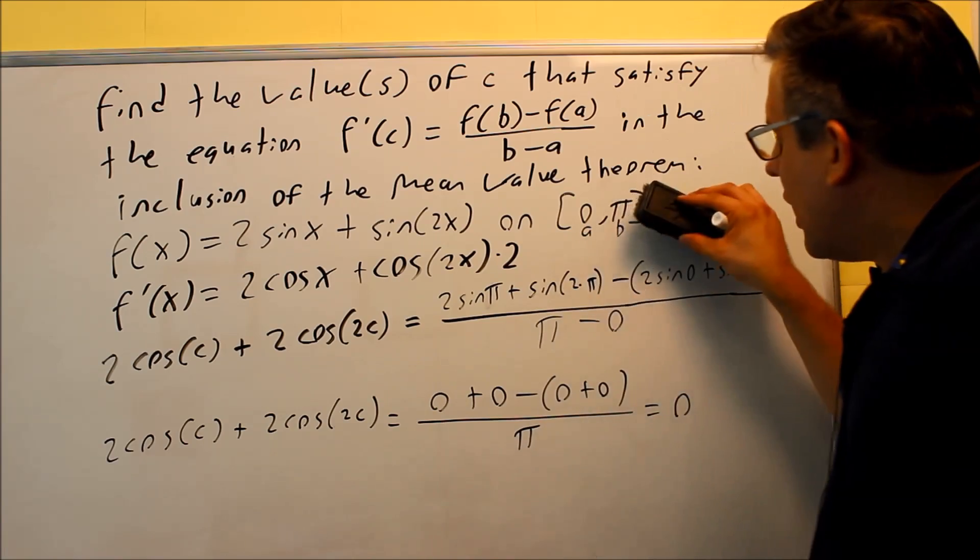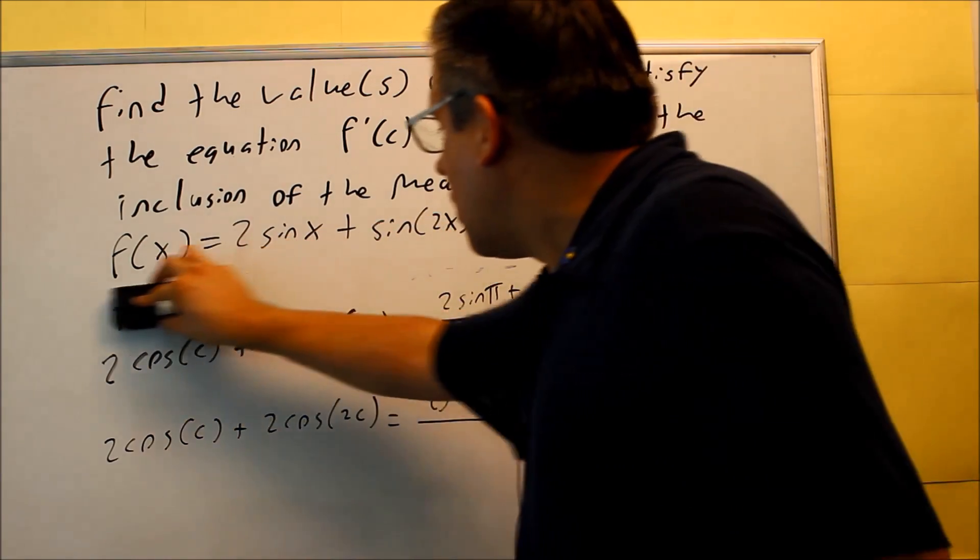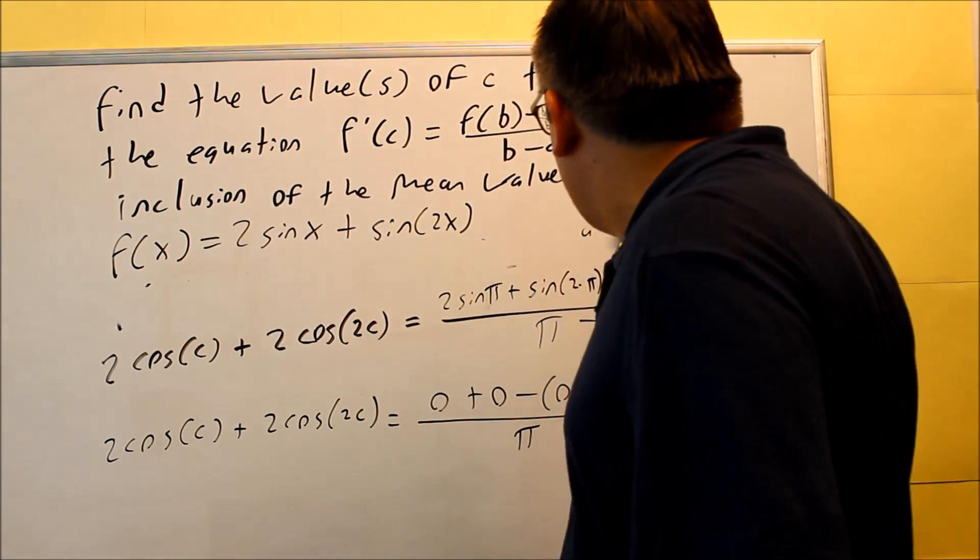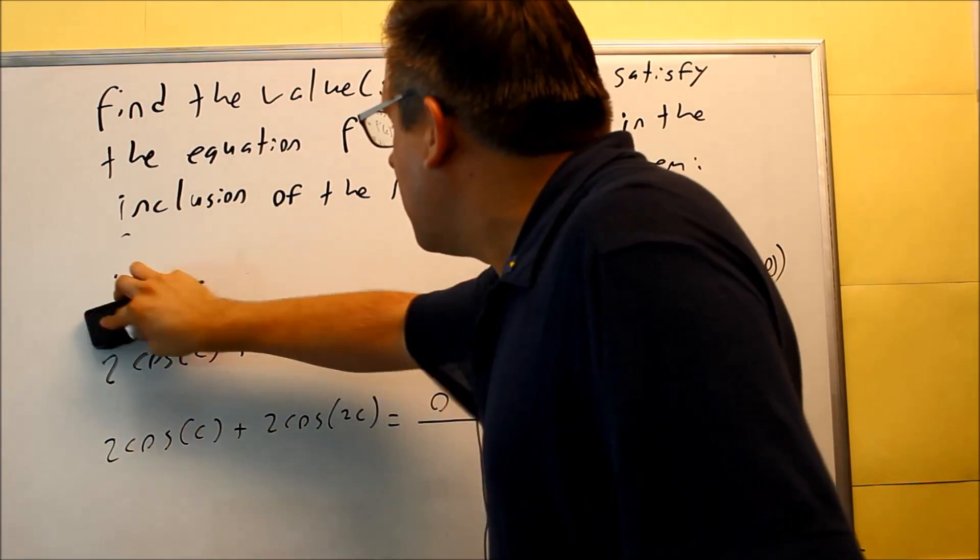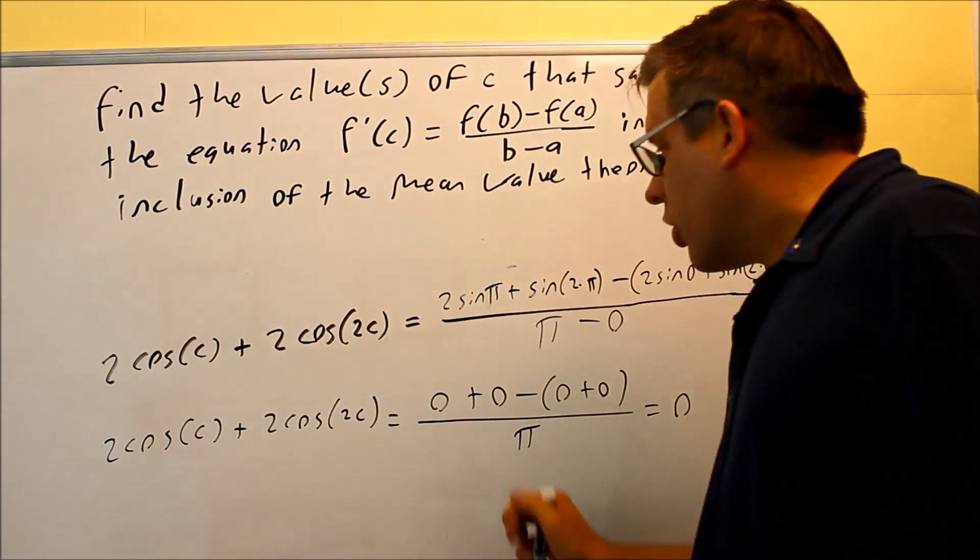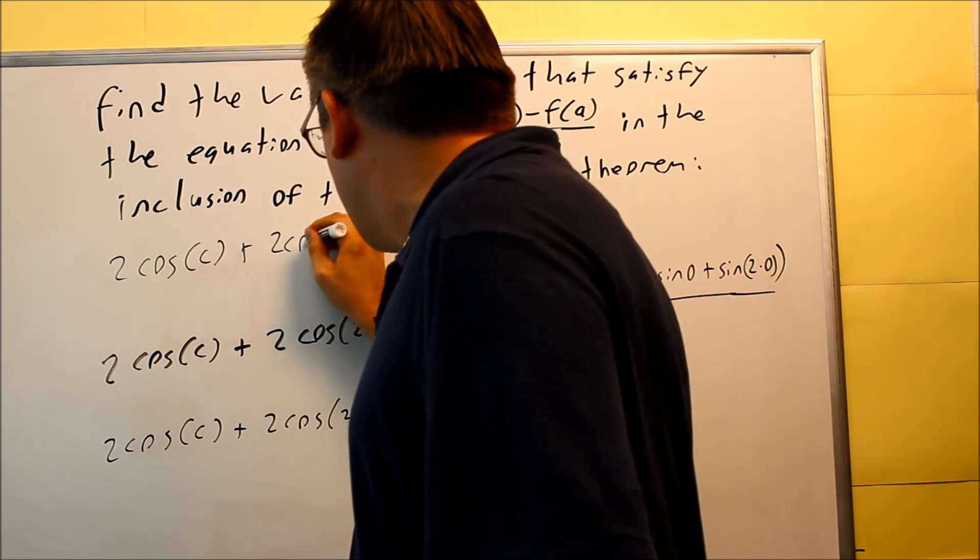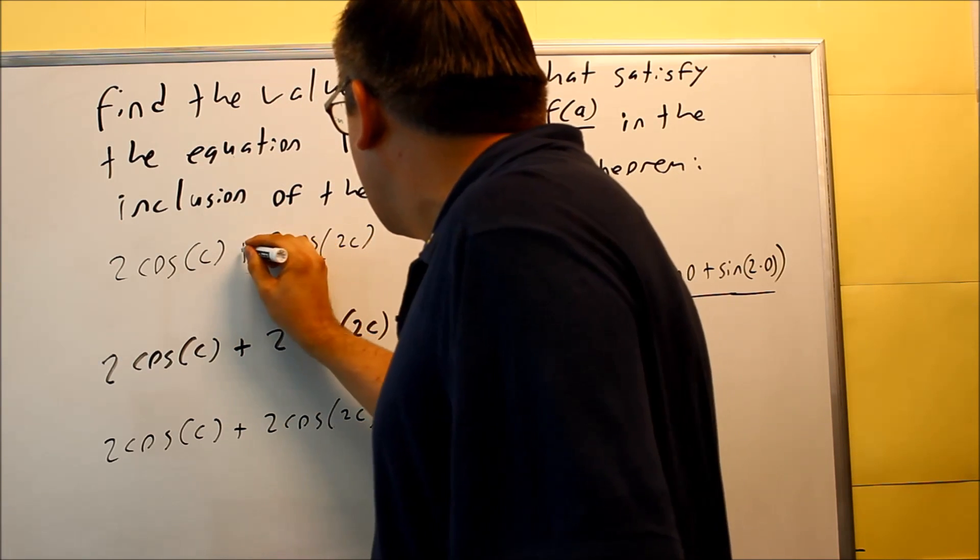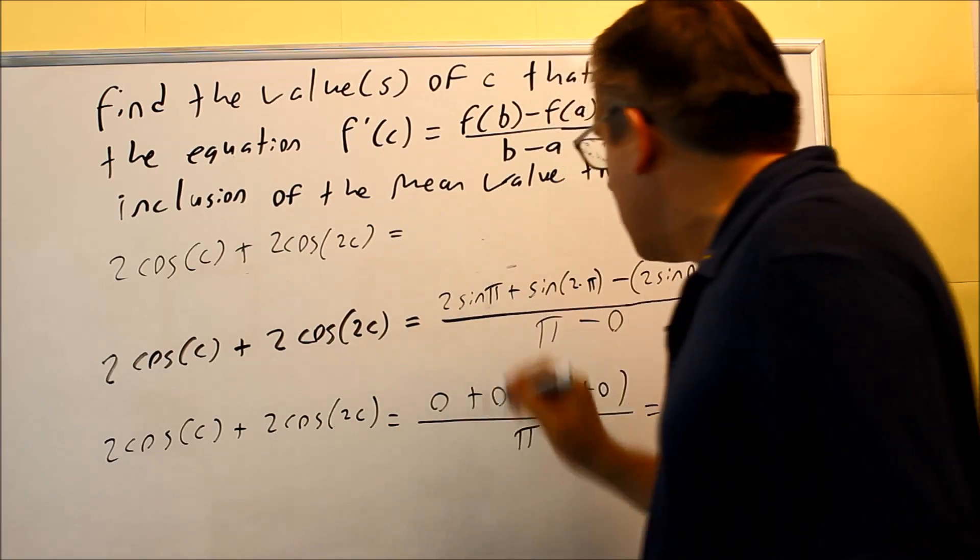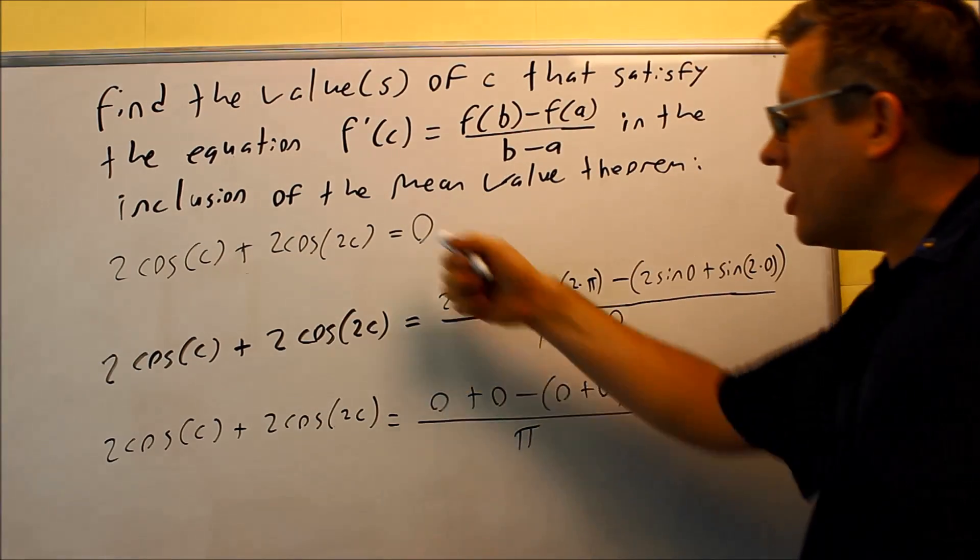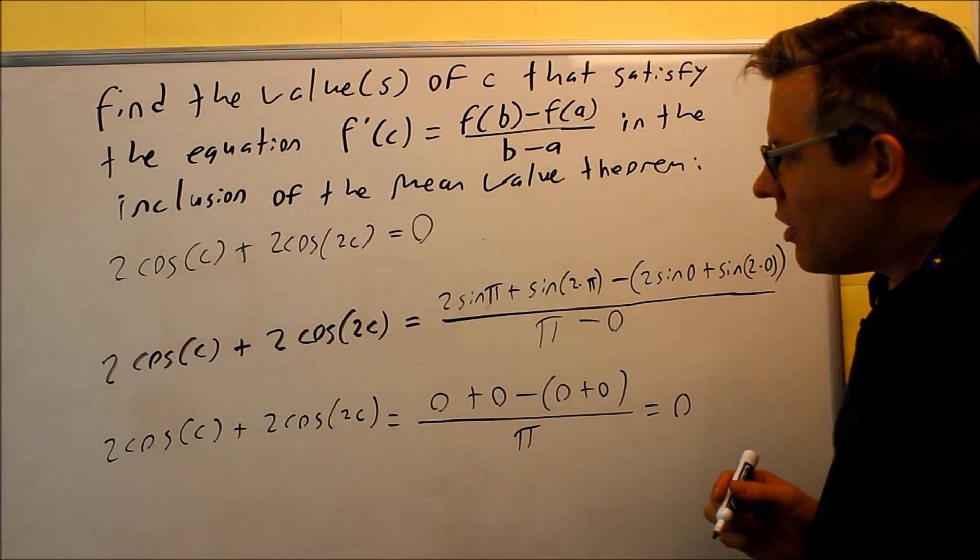Therefore, the main equation that I'm going to solve: 2cos(c) + 2cos(2c) = 0. So now I need to solve that equation for c.